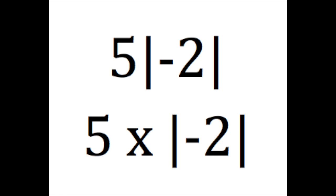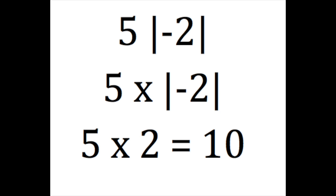If we have a number right outside the absolute value of another number, that implies multiplication. In this case, five times the absolute value of negative two. First, we take the absolute value of negative two. Then, we're left with five times two, which is ten.